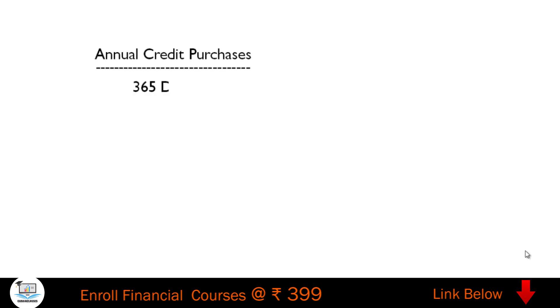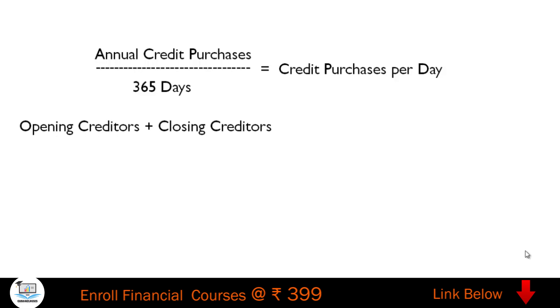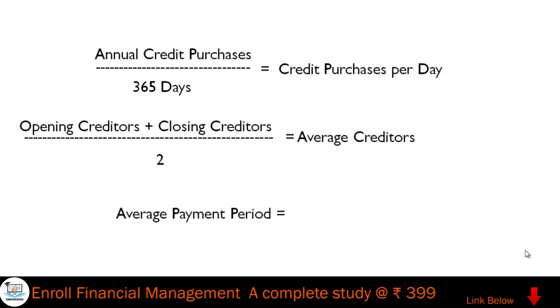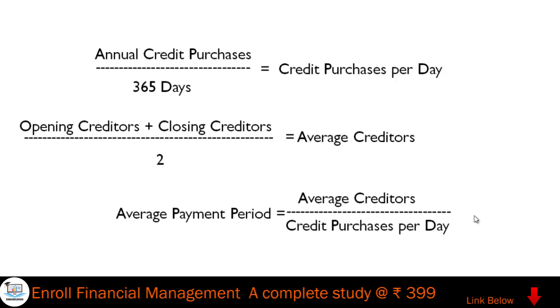To calculate credit purchases per day, take annual credit purchases and divide by 365 days. Average creditors is opening creditors plus closing creditors divided by two. With these two values, the average payment period equals average creditors divided by credit purchases per day.